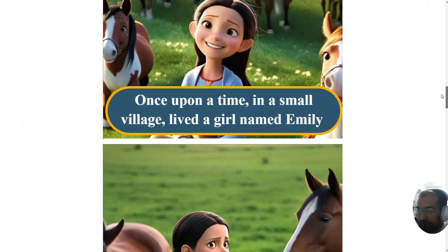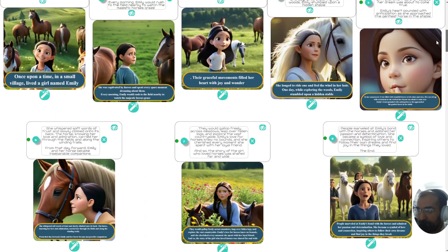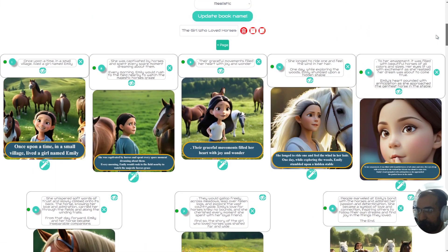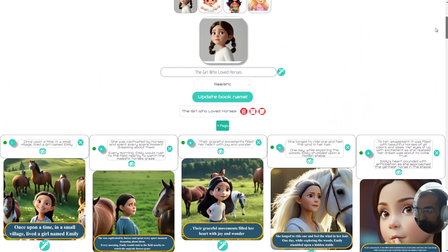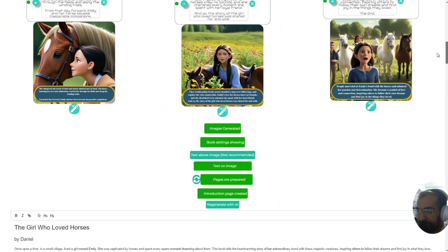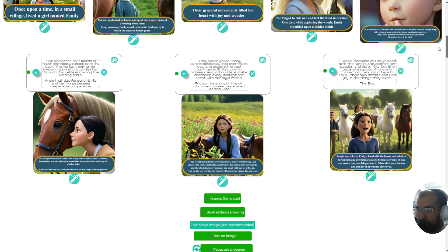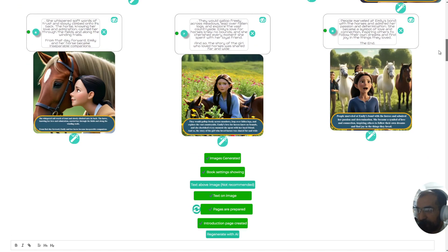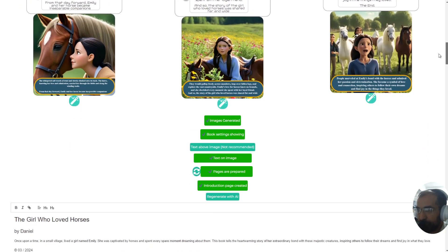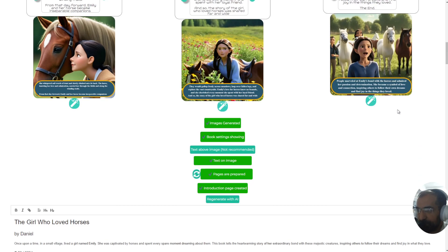Without further ado, let's go into a book that I've already created. Once I've finished showing you a book I've created, we'll go and create a brand new book together so we can see how this is done. Let's click on 'Text on Image'.